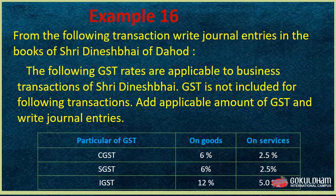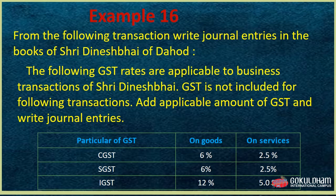From the following transactions, write journal entries in the books. GST is not included in the following transactions — add the applicable amount of GST and write journal entries. The GST rates applicable are: for goods, CGST and SGST at 6% each (total 12%); for services, CGST and SGST at 2.5% each (total 5%).